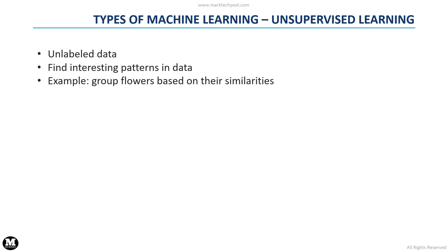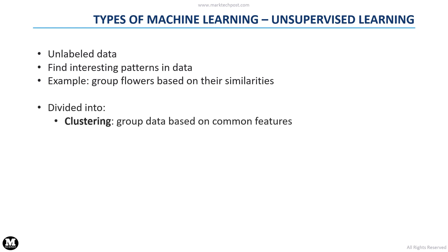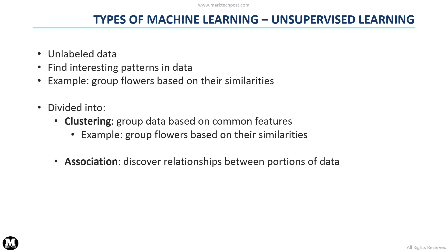Unsupervised learning methods can be divided into clustering, association, and dimensionality reduction. With a clustering solution, we can group data based on common features — for example, we can group flowers based on their similarities. With association methods, we can discover interesting relationships between portions of data. For example, we can discover that people who buy product X tend to also buy product Y.